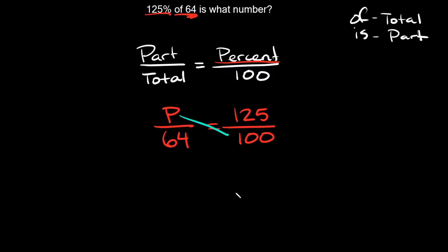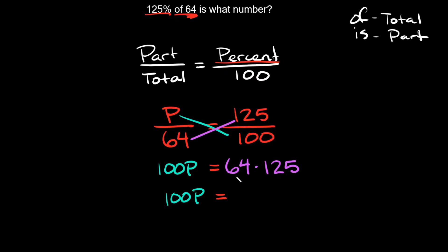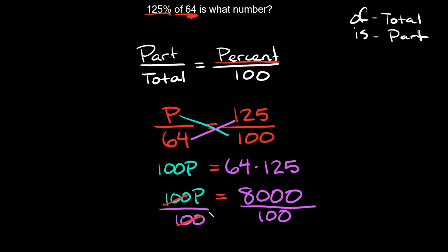Our proportion is set up, so cross multiply: p times 100 is 100p, and that equals 64 times 125, which equals 8,000. To solve for p, divide by 100 on both sides — the 100s cancel out, leaving p equal to 8,000 divided by 100. Simplify by crossing out the two zeros: 8,000 divided by 100 is just 80. So p equals 80 — meaning 125% of 64 is 80.